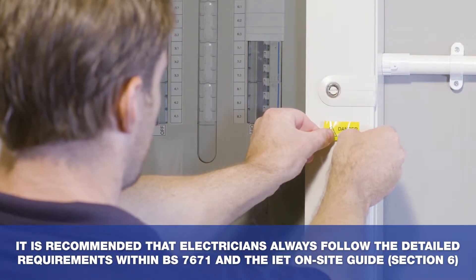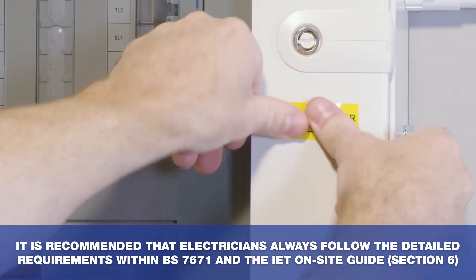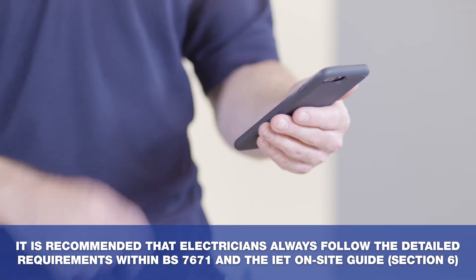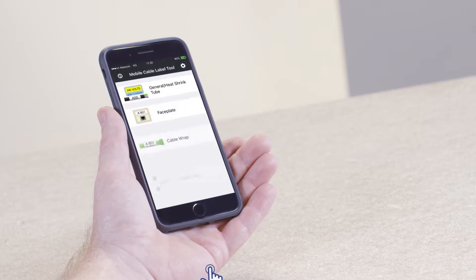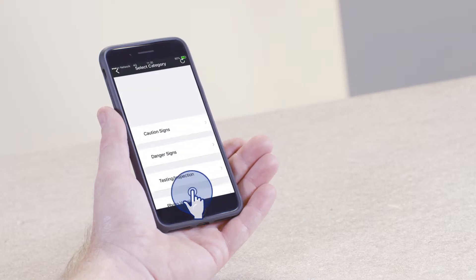Within the mobile app, there are a number of compliant warning templates ready to use. Let's start by launching the app. From the main menu, tap the Danger Caution Sign option.